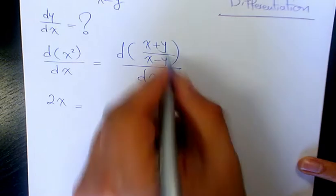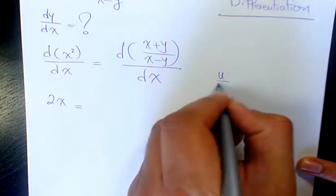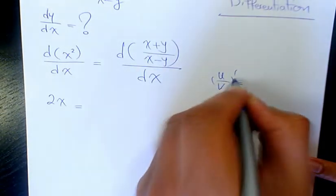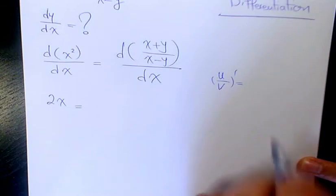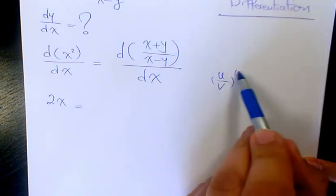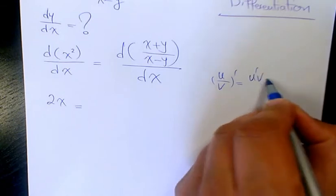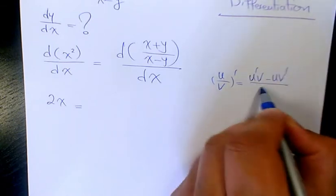Now we have rational expression u over v. The derivative of it is going to be u prime v minus u v prime divided by v squared.